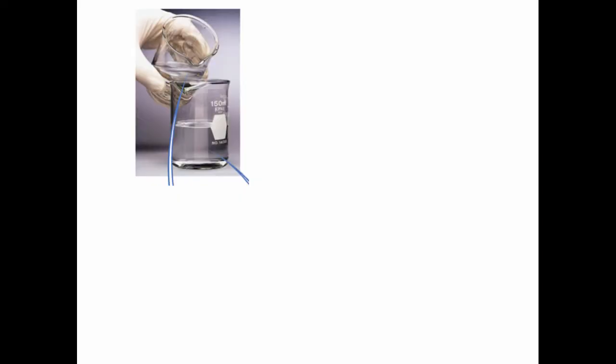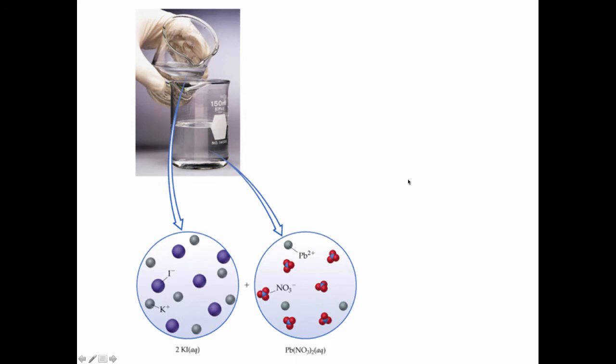If we mix together a solution of lead(II) nitrate and potassium iodide, here's what it looks like both on a macroscopic level, both solutions are clear and colorless, and on an atomic level, where the lead(II) nitrate consists of lead(II) plus ions and nitrate NO3 minus ions dissolved in water, and the potassium iodide solution is a mixture of potassium ions and iodide ions in solution.